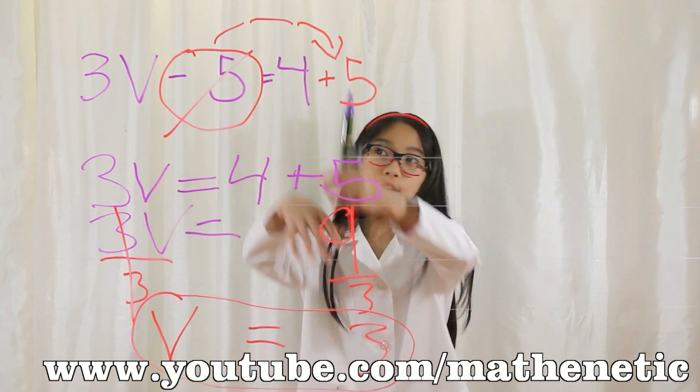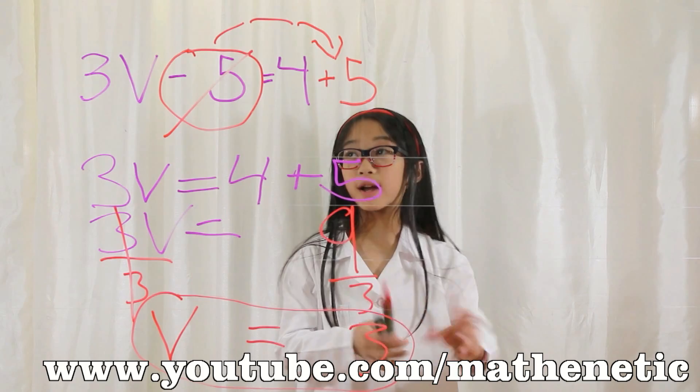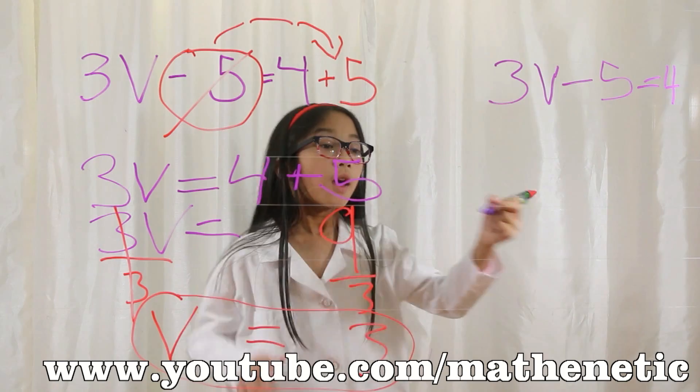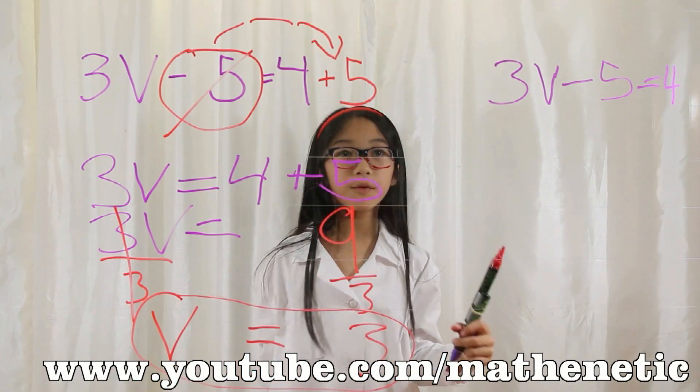Now I'm going to prove that all of this is correct. The original equation was 3v minus 5 equals 4.